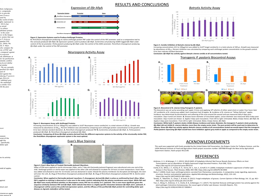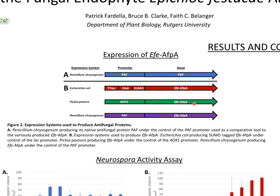We will now move on to the results and conclusions of our current experiments. First, we have the multiple expression systems used to produce EFE-AFPA: the bacterium E. coli, a yeast Pichia pastoris, and a fungal Penicillium chrysogenum. The activities of all our AFPAs will be compared to PAF, which is the native Penicillium chrysogenum protein. This antifungal protein has a high degree of structural and sequence similarity to our EFE-AFPA, making it a good control.